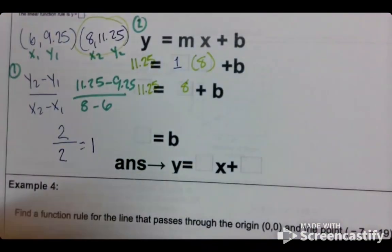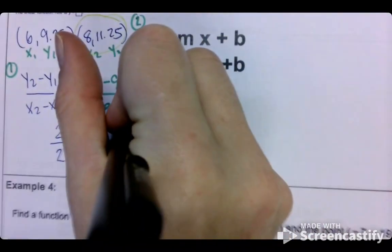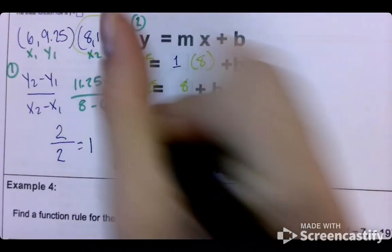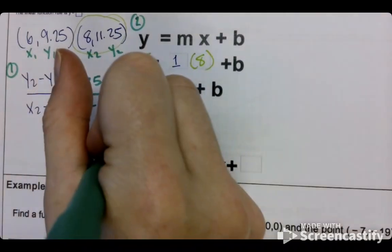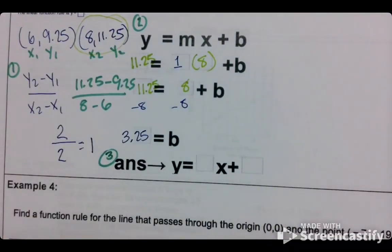And then what do we do to both sides? Minus 8 on both sides, which gives us 3.25. Then we are on to our step three. What is our final step? What does that look like?